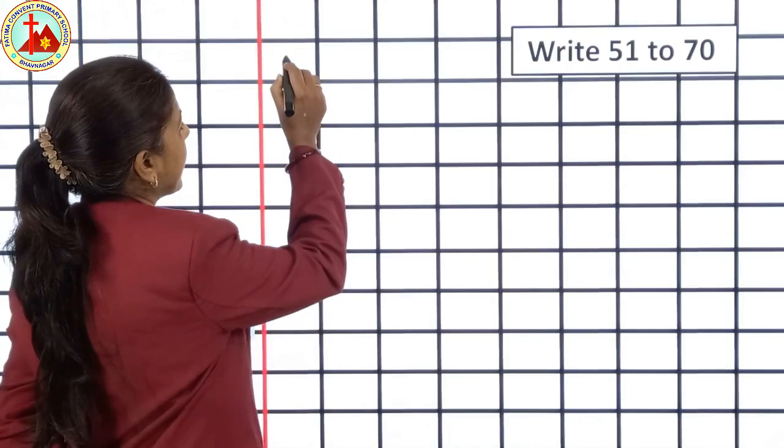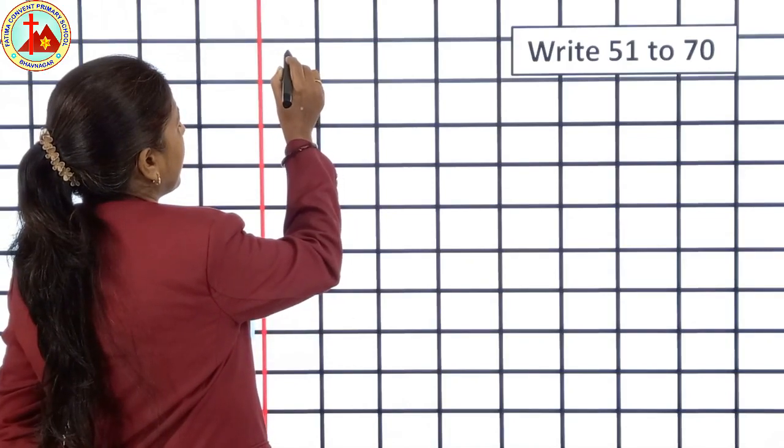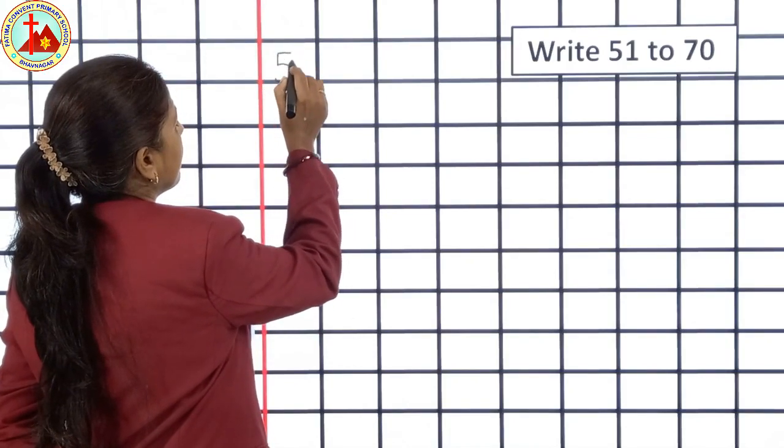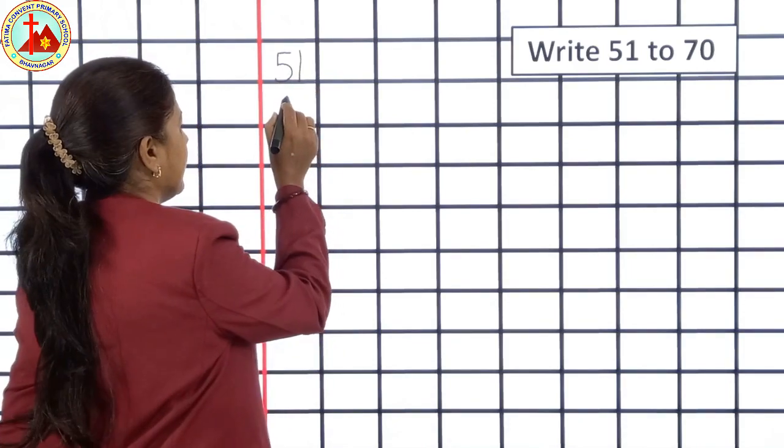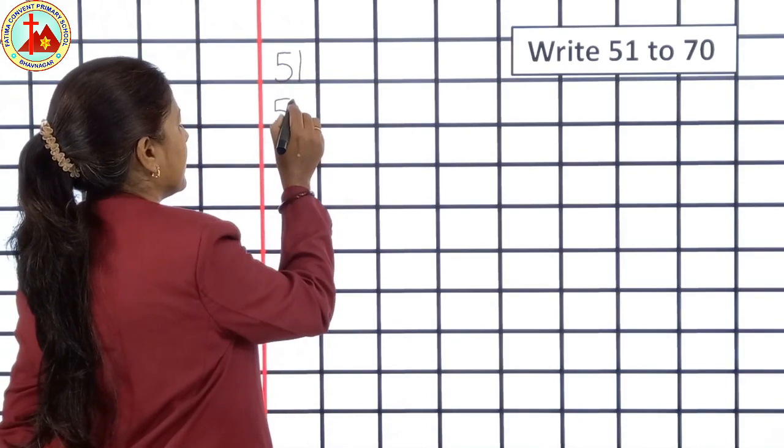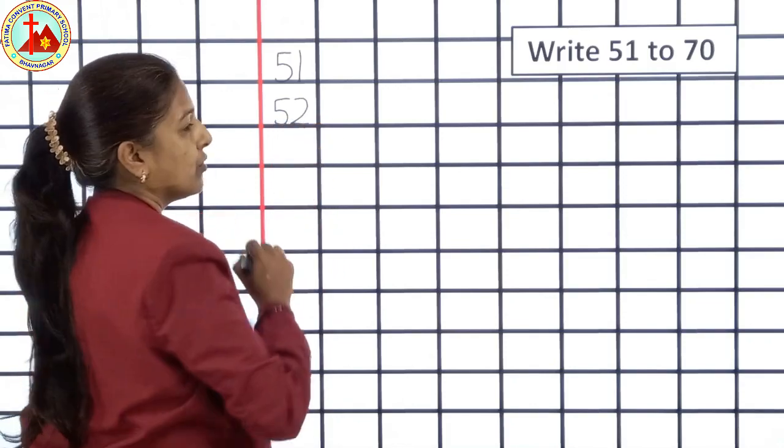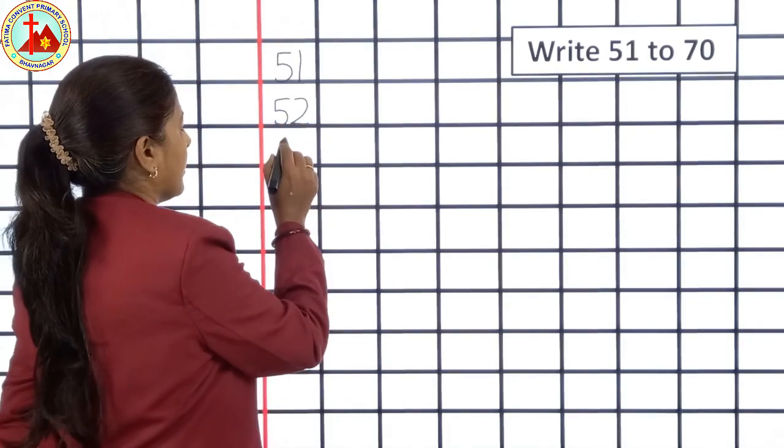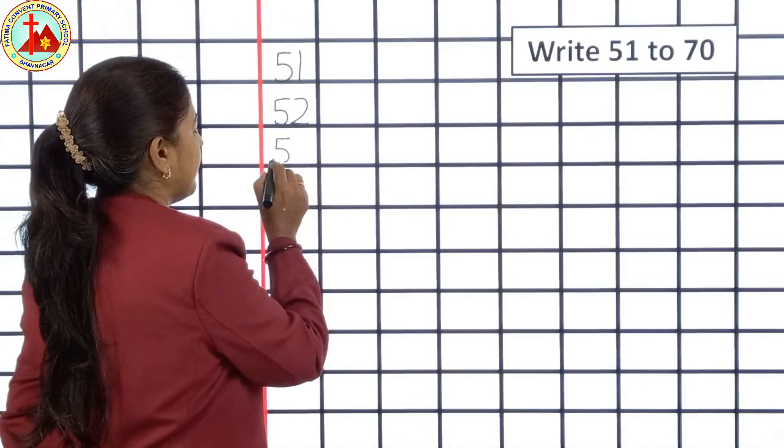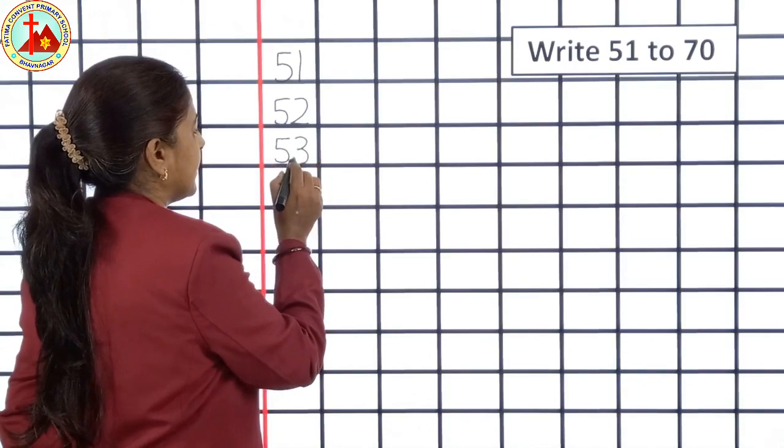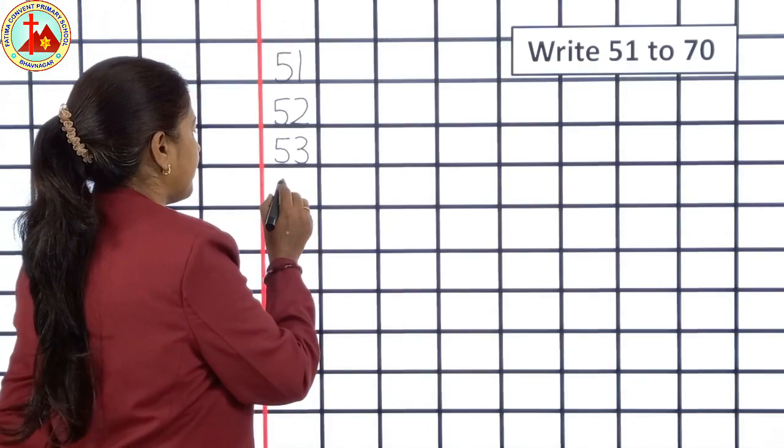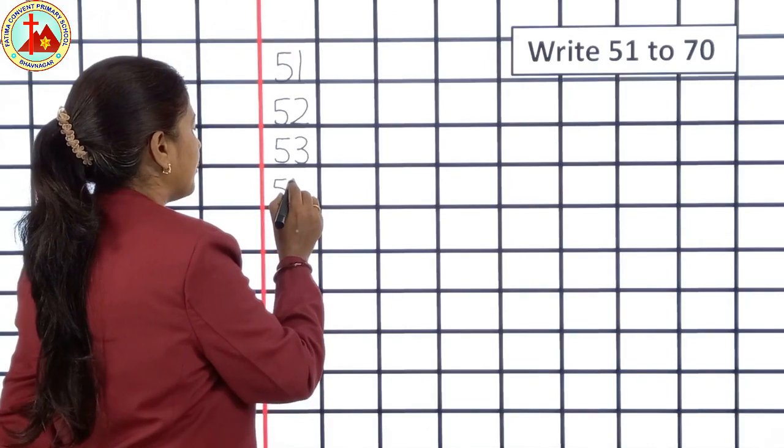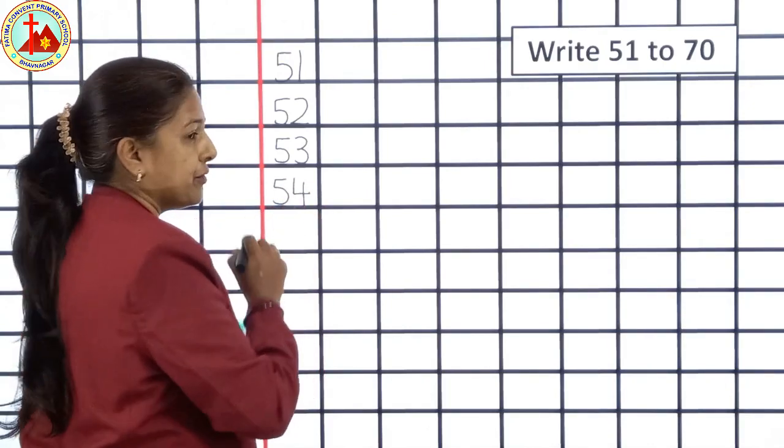First, what we will write? 5, 1, 51. Then, 5, 2, 52. 5, 3, 53. After 53, 5, 4, 54.